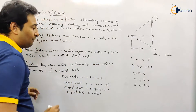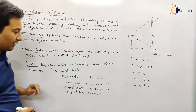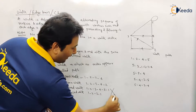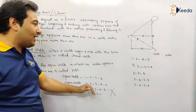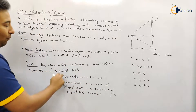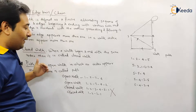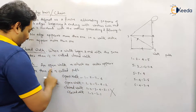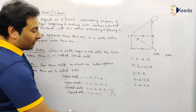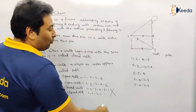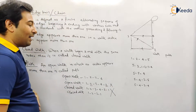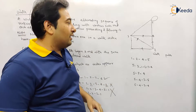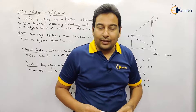Now let's check which of our previous walk examples are also paths. First, it must be an open walk — so the two closed walks are out of the picture. Of the two open walks: in the second one (1-2-3-4-2), vertex 2 appears more than once, so it is not a path. The first traversal (1-2-3-4) is both a walk and a path, since no vertex is repeated.